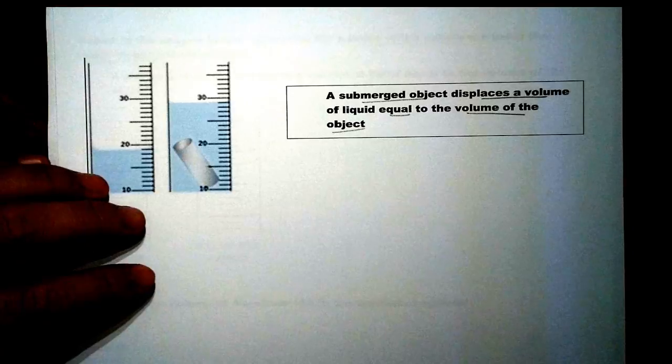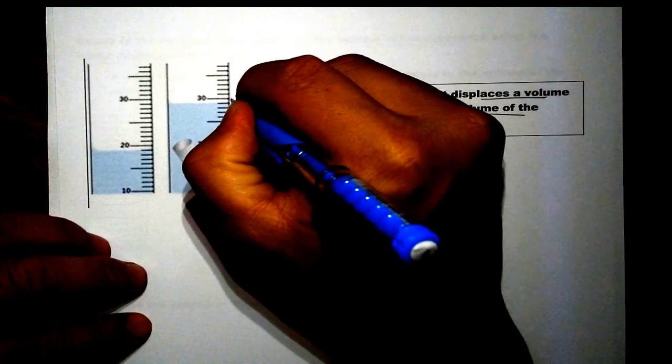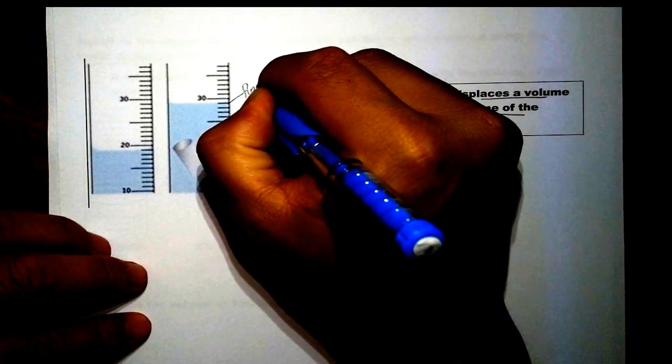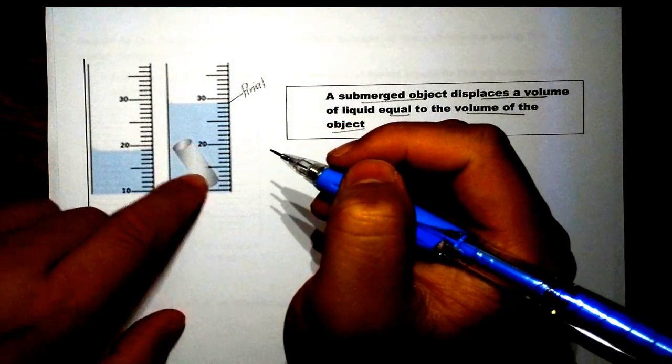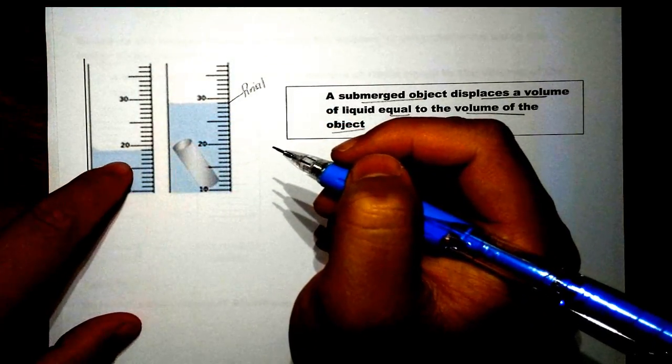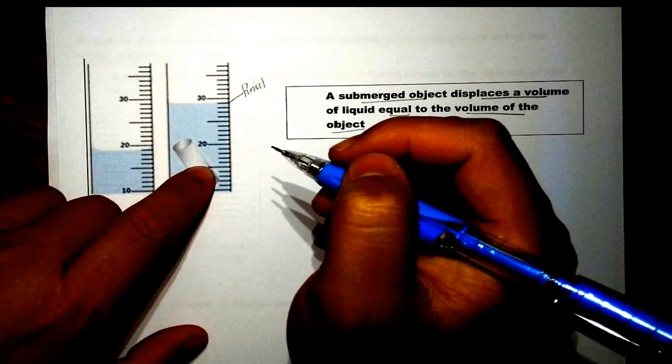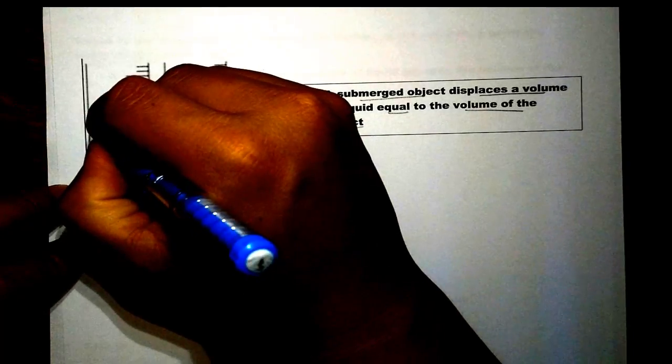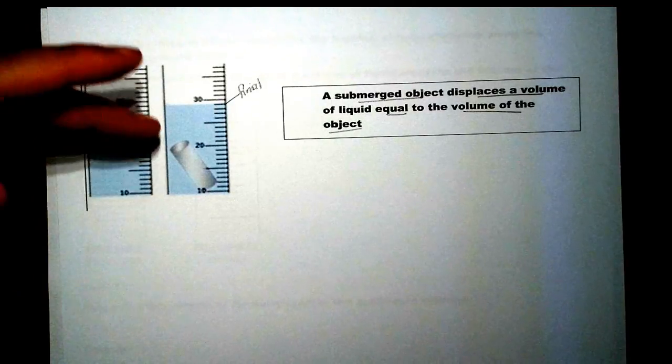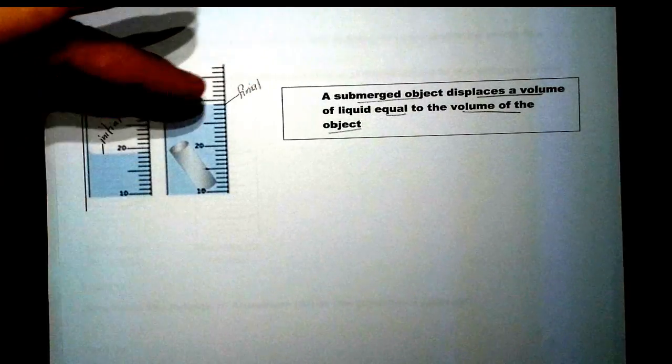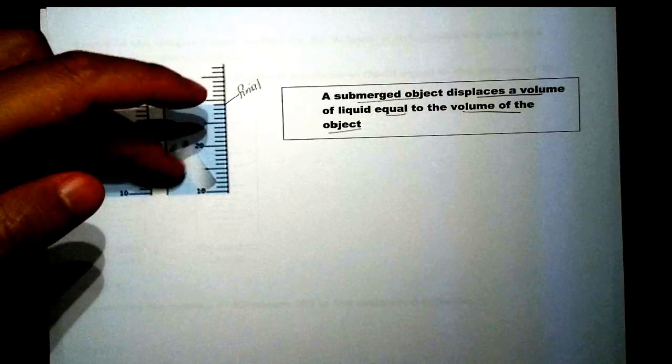And think of this in terms of math. Basically this will be your final reading, that is the result from adding the object. And this will be your initial reading. And once we figure out the difference, which is a basic equation, we take the final minus initial. That will give us the change.